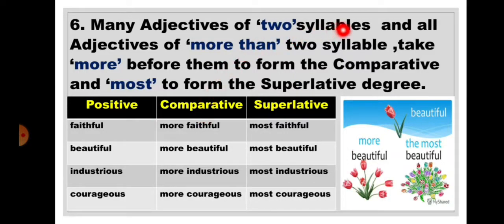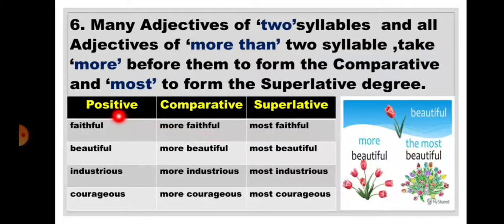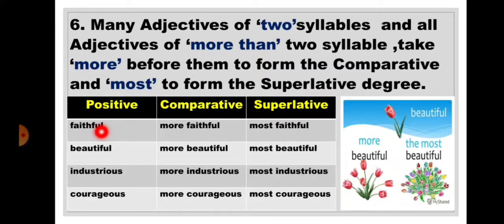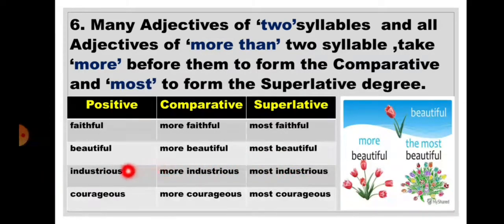Rule 6: Many adjectives of two syllables, and all adjectives of more than two syllables, take more before them to form the comparative and most to form the superlative degree. For example: faithful — it has two syllables, so we add more to get more faithful, and most to get most faithful. Beautiful → more beautiful → most beautiful. Industrious → more industrious → most industrious. Courageous → more courageous → most courageous.